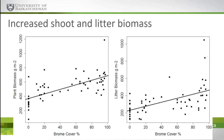Other things we see: increased productivity — this is why brome is such a good forage grass. As brome cover increases, we see greater plant standing biomass and greater litter accumulation. I don't think I've shown you anything thus far that would be surprising to you. I'm just trying to set the stage.